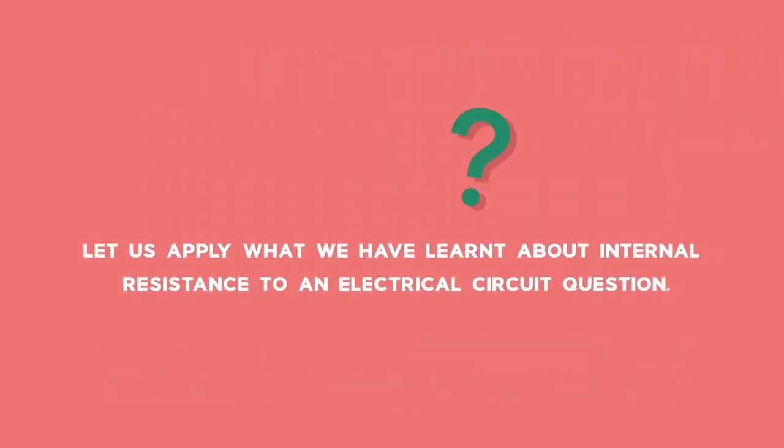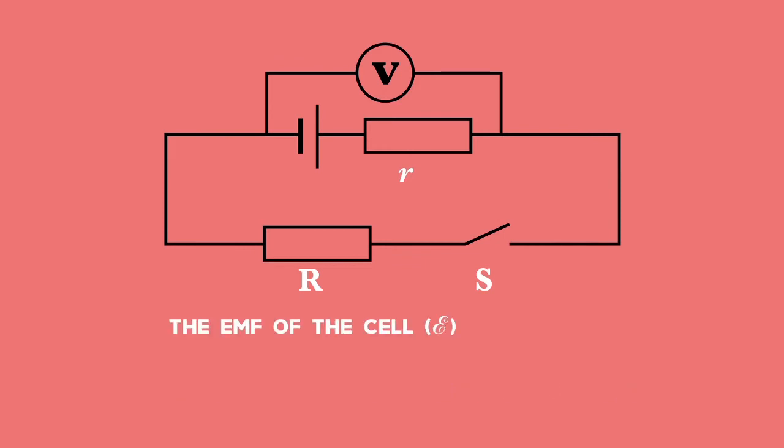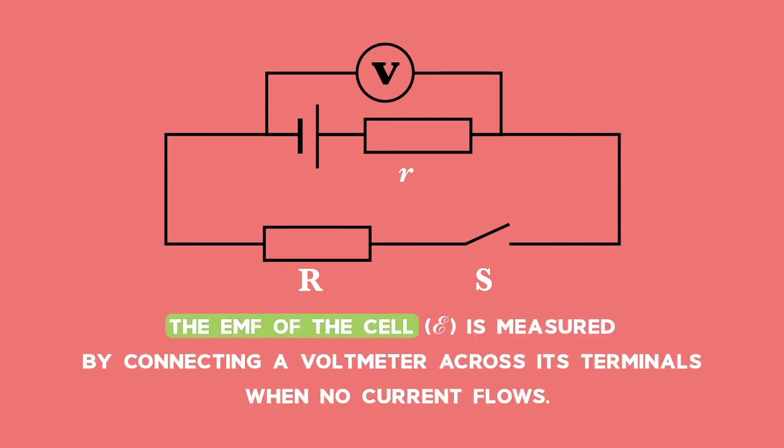Let us apply what we've learned about internal resistance to an electrical circuit question. When there is no current in an open circuit, there are no lost volts. The EMF of the cell as the symbol epsilon is measured by connecting a voltmeter across its terminals when no current flows.